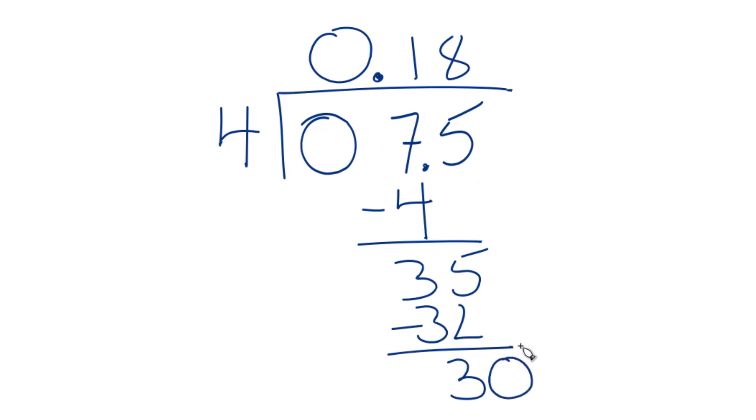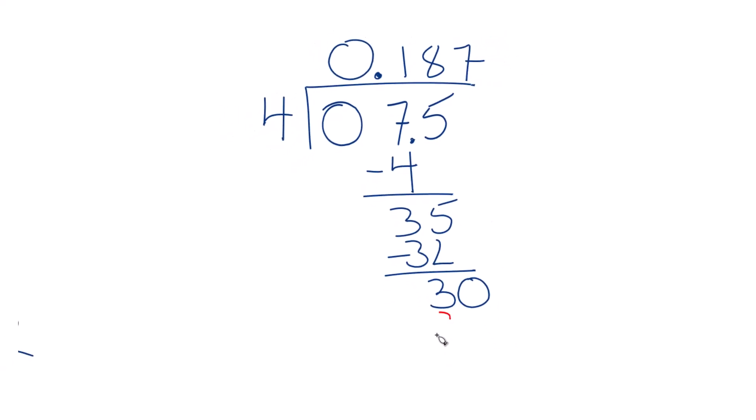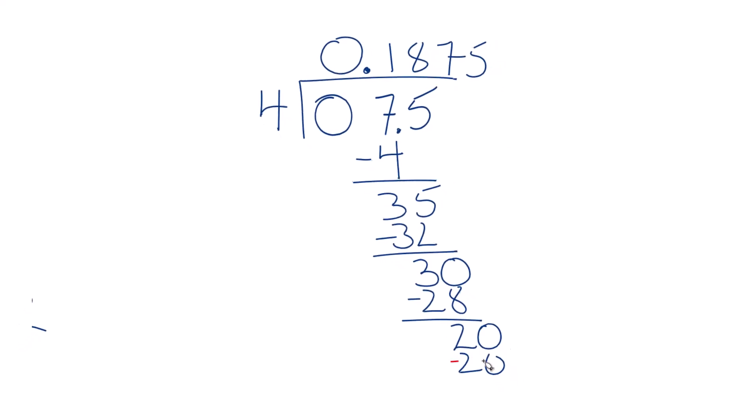And we're going to put a 0 here and move over 1. 7 times 8 is 28. Subtract, we get 2. Move over here and let's call this 25 times 4 is 20. So that works out, no remainder.